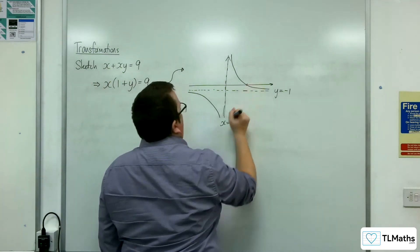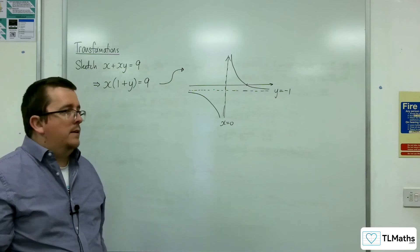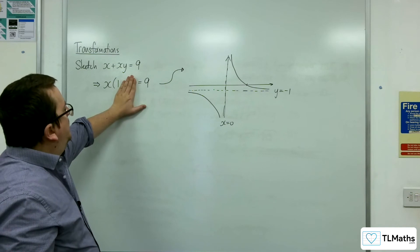And then you'd want to find out where it's crossing the x-axis, which is when y is 0. So when y is 0, x is going to be 9.